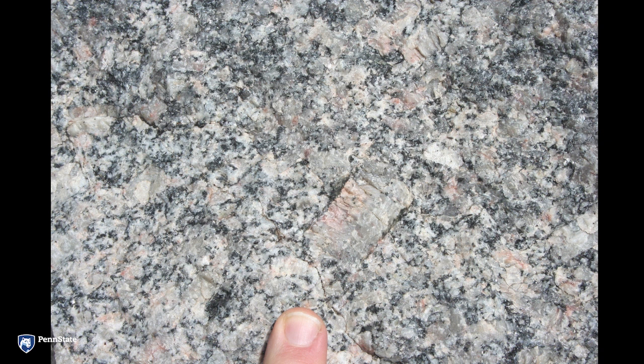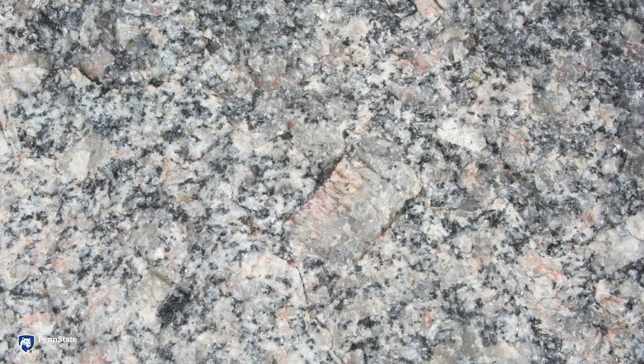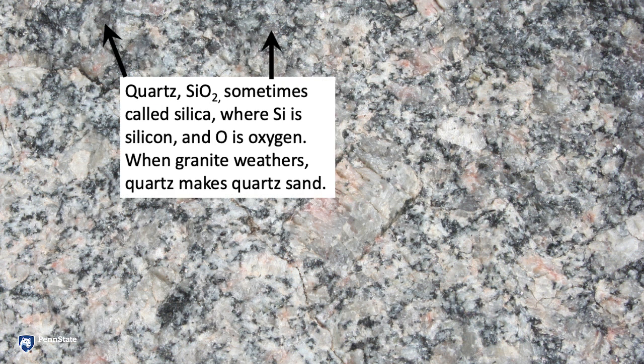That is my index finger at the bottom for scale. Zooming in further, you'll notice that the granite is made of grains. Some of those grains are little gray ones with arrows pointed at them — they are a mineral called quartz. The chemical formula of quartz is SiO2, sometimes called silica; Si stands for silicon and O is oxygen.